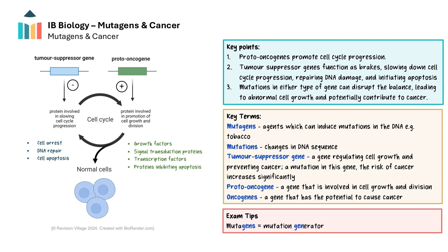Proto-oncogenes encode proteins that promote cell cycle progression, cell growth and division. They act as accelerators of the cell cycle, responding to growth signals and ensuring that cells divide when needed. They play key roles in transmitting signals from growth factors and other external stimuli to the cell's interior, influencing cellular responses such as proliferation and differentiation. The proteins may play a role in transcription or inhibit apoptosis or cell death. The coordinated action of proto-oncogenes and tumour suppressor genes ensures a balance between cell proliferation and inhibition.